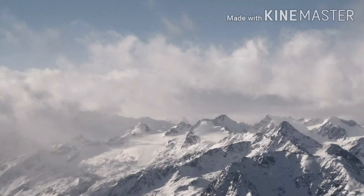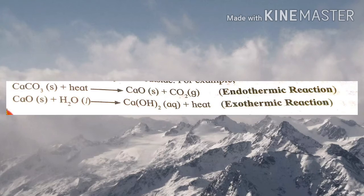Now we discuss endothermic and exothermic reactions. During exothermic reactions, heat is given away, while during endothermic reactions, heat is either absorbed or has to be supplied. For example, CaCO₃ + heat → CaO + CO₂. Here heat energy is required, therefore it is an endothermic reaction.